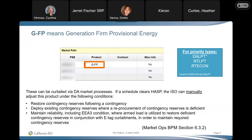GFP energy products can be curtailed via the day ahead market processes. The ISO can manually adjust this product under specific conditions: restore contingency reserves following a contingency; deploy existing contingency reserves where reprocurement is deficient; and maintain reliability, including EEA-3 conditions, where armed load is utilized to restore deficient contingency reserves in conjunction with ETAC curtailments. This wording is found in the Market Ops BPM section 6.3.2.